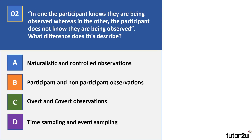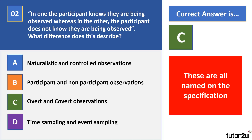Question 2. In one, the participant knows that they are being observed, whereas in the other, the participant does not know that they are being observed. What difference does this describe? Is it the difference between A, naturalistic and controlled observations, B, participant and non-participant observations, C, overt and covert observations, or D, time sampling and event sampling? Your correct answer is overt and covert, because in overt observations people know they're being observed, and covert — like the word undercover — people don't know they're being observed.